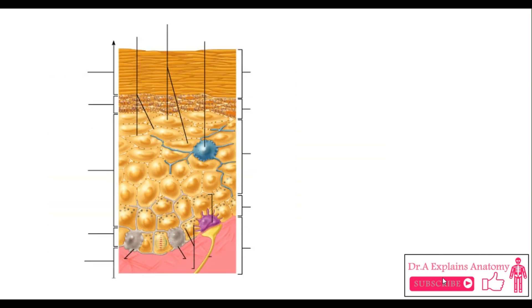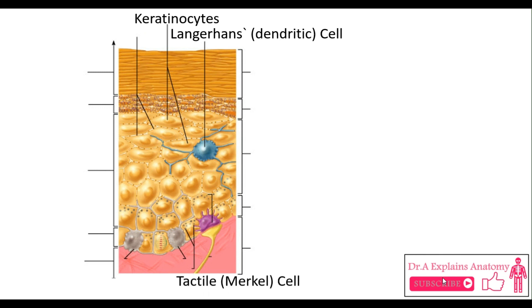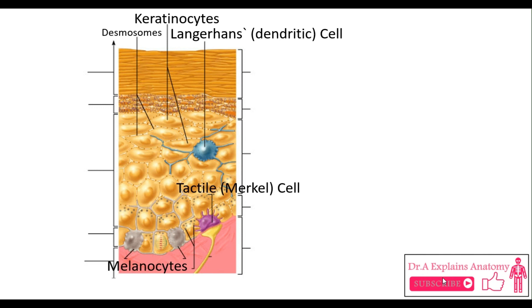Moving to the different cell types in the epidermis. First, we have a Langerhans dendritic cell in blue. These are the keratinocytes. This is a tactile Merkel cell in purple. And these are melanocytes. The keratinocytes are connected together via the desmosomes. This right here is a sensory nerve ending that receives the sensation from the tactile Merkel cell. And these are the melanin granules secreted by the melanocytes.